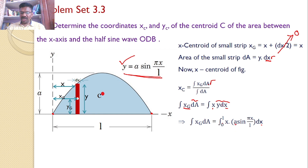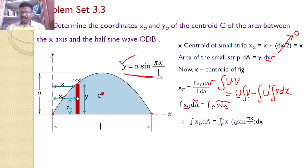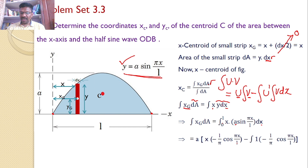Since a is a constant, we take it outside. This is in the form ∫u·v, so we use integration by parts: u·∫v − ∫(u'·∫v)·dx. Here u = x and v = sin(πx/l). Substituting, we get a times x·∫sin(πx/l), where ∫sin(πx/l) = −(l/π)·cos(πx/l), minus u' = dx/dx = 1 times ∫v·dx.